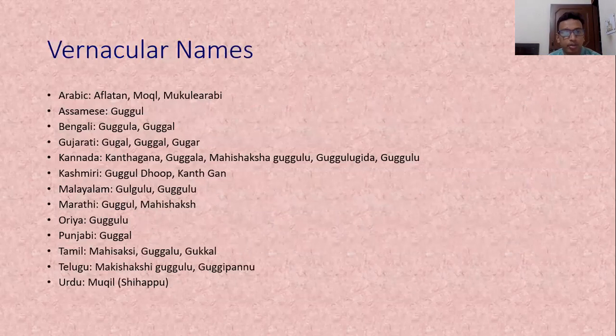The vernacular names of this plant are Gugulu, Gugula, Gugul, Gurar, Gugul Dhop, Kanthagan, Gugulu, etc.